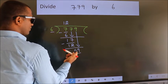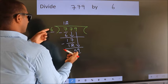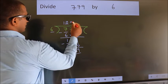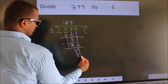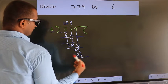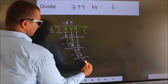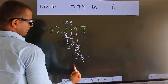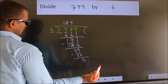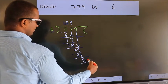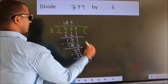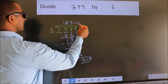A number close to 59 in the 6 times table is 6 nines, which is 54. Now we subtract and we get 5. There are no more numbers to bring down, so we stop here. This is our remainder, and this is our quotient.